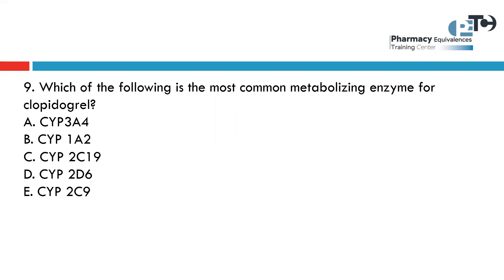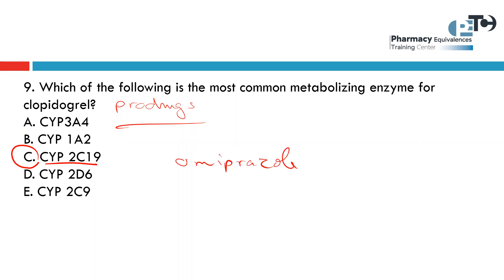Which is the most common metabolizing enzyme for clopidogrel? Clopidogrel must be converted to its active metabolite to be active. The enzyme that does this is cytochrome CYP2C19. Any drug affecting CYP2C19 by inhibition or induction will affect clopidogrel activity — for example, the interaction with omeprazole, a PPI that inhibits this cytochrome. This inhibits the conversion of clopidogrel to its active form, thereby decreasing clopidogrel activity.